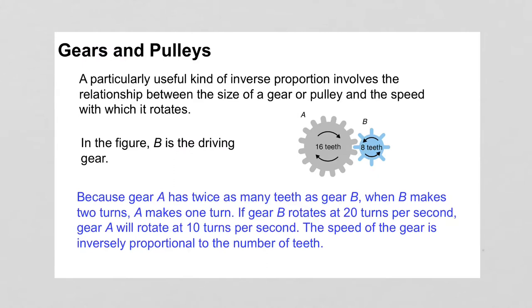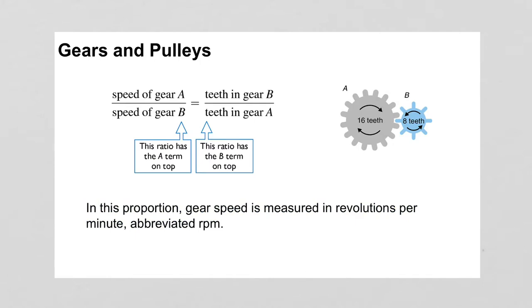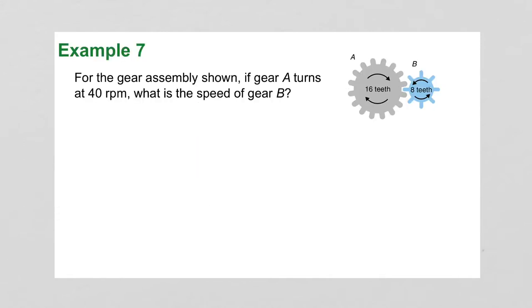Pulleys. A particularly useful kind of inverse proportion involves a relationship between the sides of a gear or pulley and the speed with which it rotates. In the figure, B is the driving gear. Because gear A has twice as many teeth as gear B, when gear B makes two turns, A makes one. To set up a proportion like this, the speed of gear A over the speed of gear B would be inversely proportional to the teeth in gear B over the teeth in gear A. You've got to be careful with that.